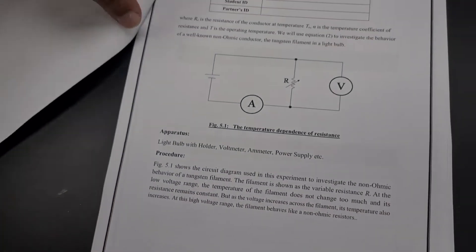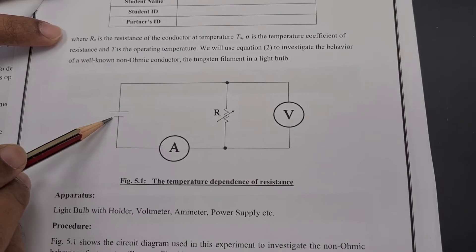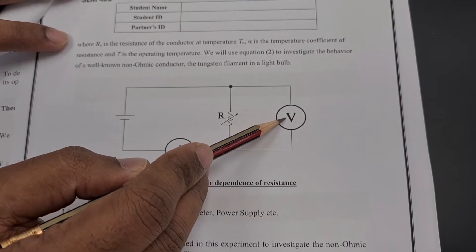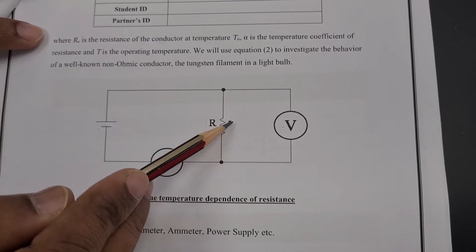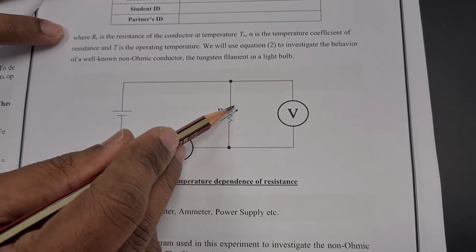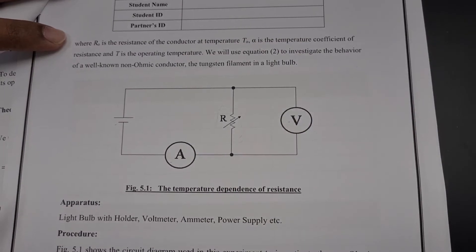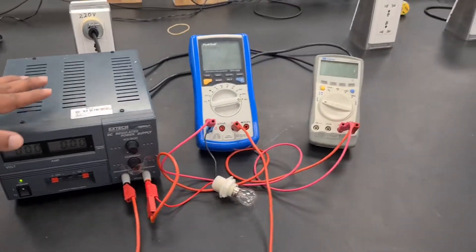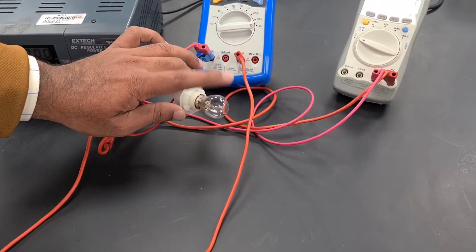If you look at the circuit diagram, we are going to use a battery, one ammeter, one voltmeter, and the bulb — because inside the bulb there is the filament. This filament has different resistance values; that is why we use this arrow mark. The arrow tells you about different values for the resistance — variable resistance. This is our schematic diagram.